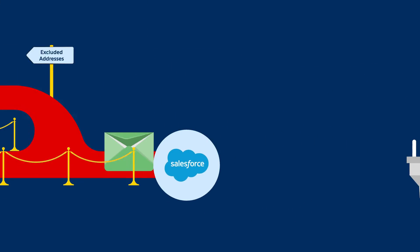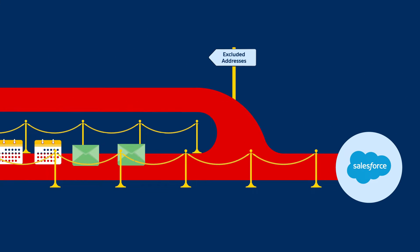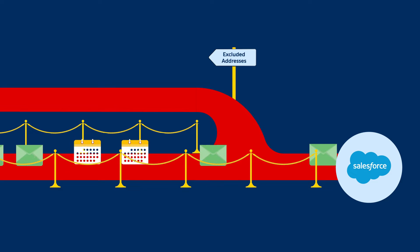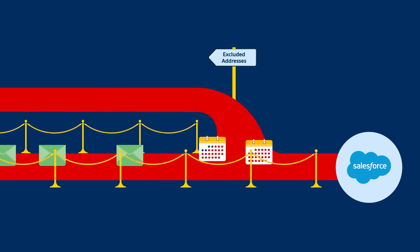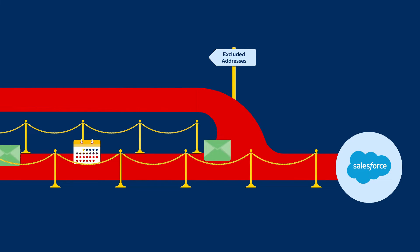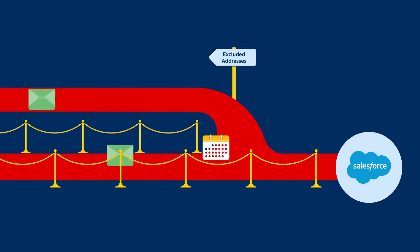Prevent certain events and emails from syncing to Salesforce. Your primary internal domain is already excluded. Add other internal and external domains that you don't want to see in Salesforce.